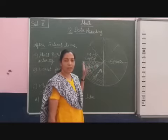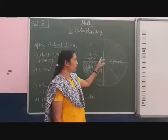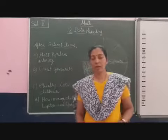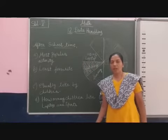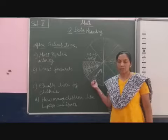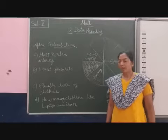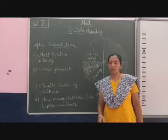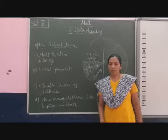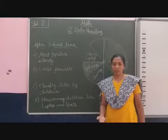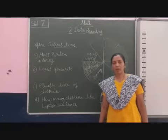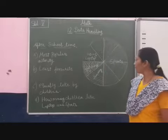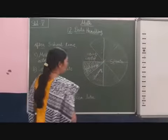This circle is divided into equal parts. How will we compare? This circle is divided into equal parts and you can write this in fraction form. Now you are able to understand that the greater fraction or decimal number — through this pie graph you can easily understand that the maximum time is spent on sports.